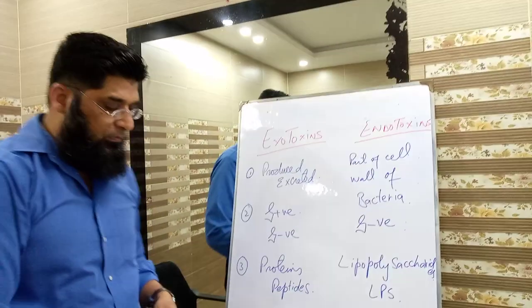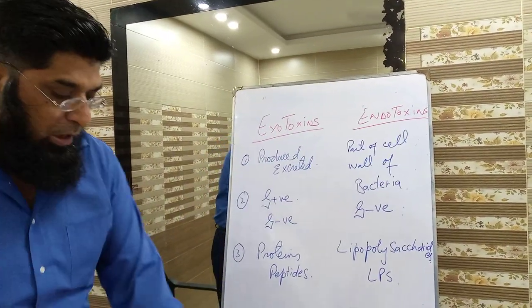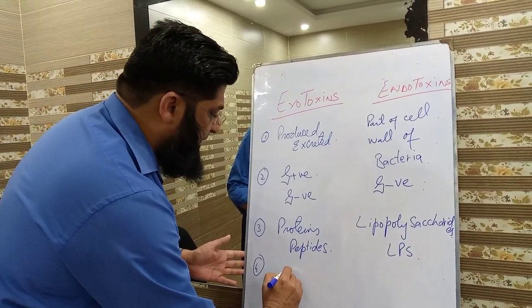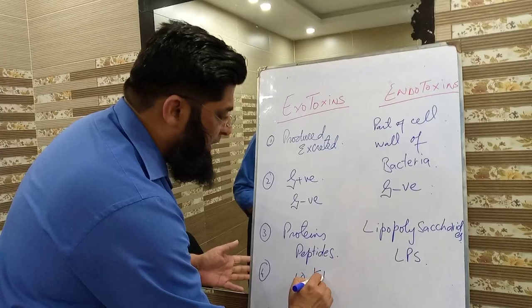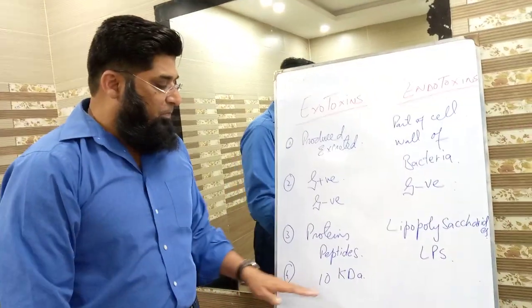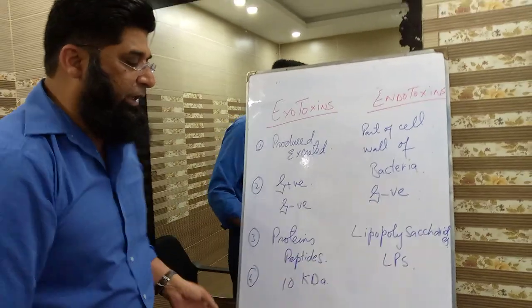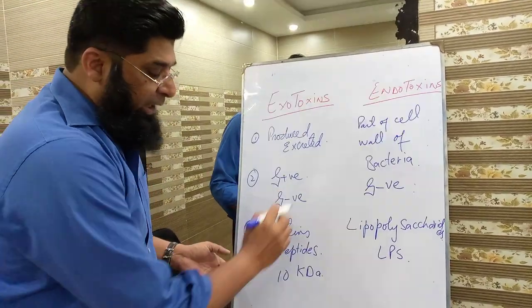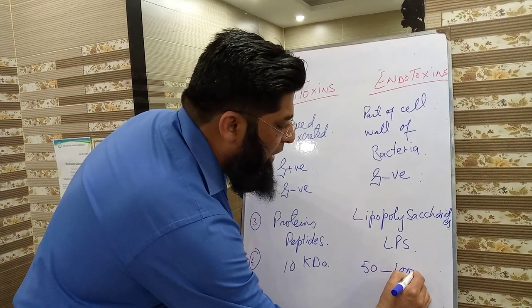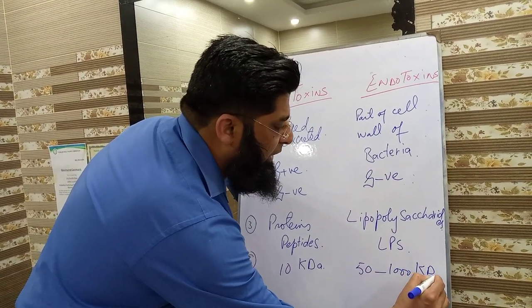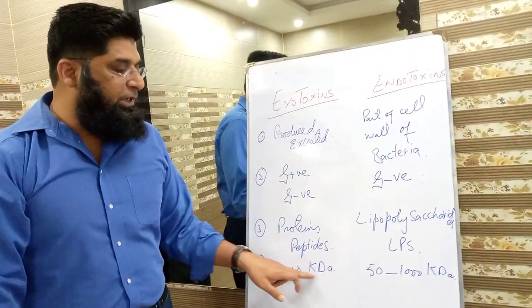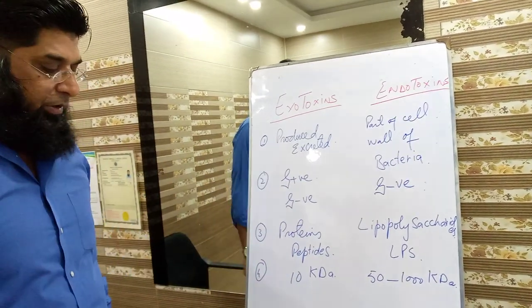The molecular weight of exotoxins is 10 kDa, whereas endotoxins have a molecular weight of 50 to 1000 kDa. kDa is the unit of measurement of molecular weight.